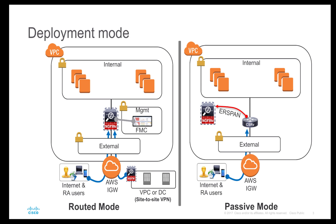On the deployment side, we have routed mode available. You can place this firewall at the edge for any traffic coming from the internet, remote access VPN users, site-to-site VPN tunnels going towards your data center or any other VPC in Amazon Web Services. You can also place this firewall within your VPC to protect inter-subnet traffic. In addition, we have passive mode available where your device will act as an IDS — deploy CSR and create an ER span of the traffic, forwarding it to NGFW for further inspection.